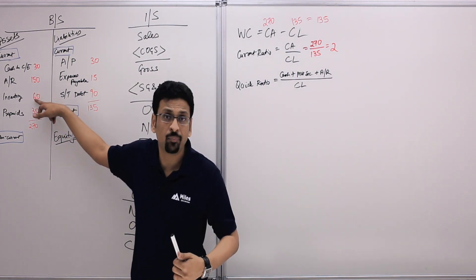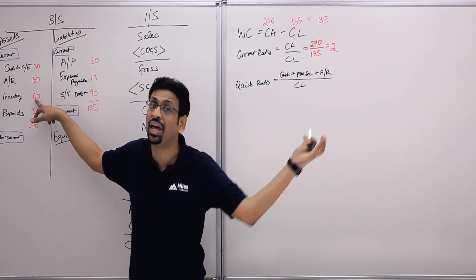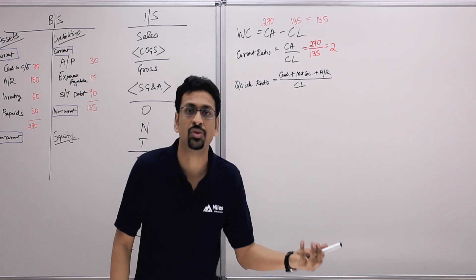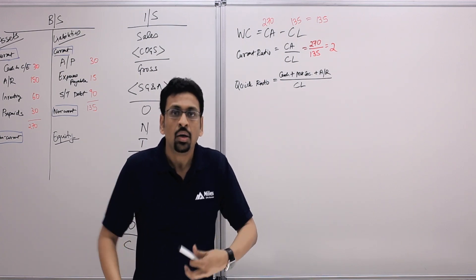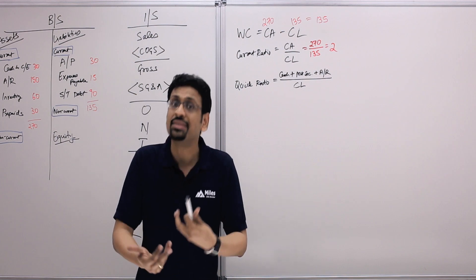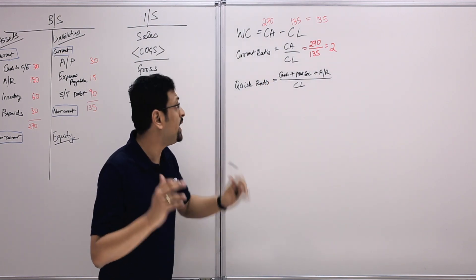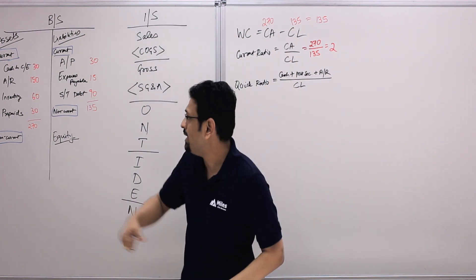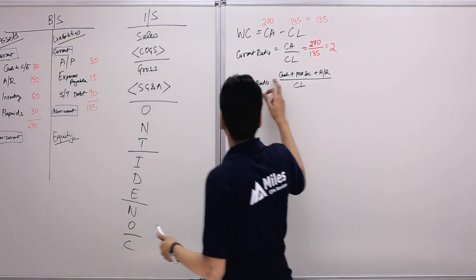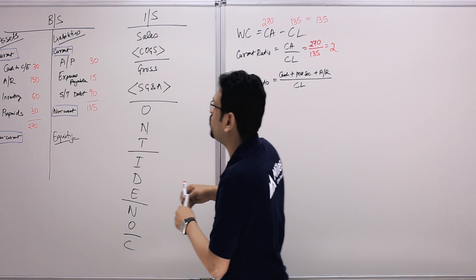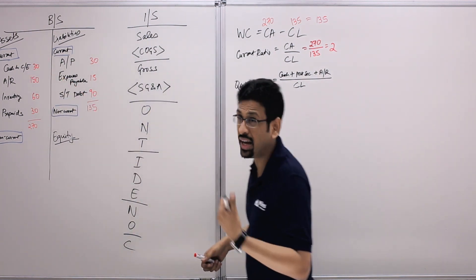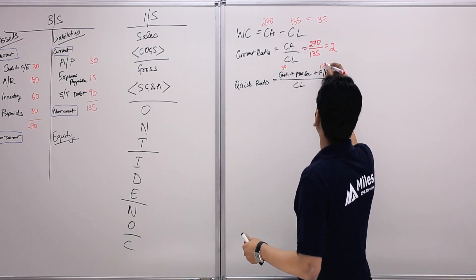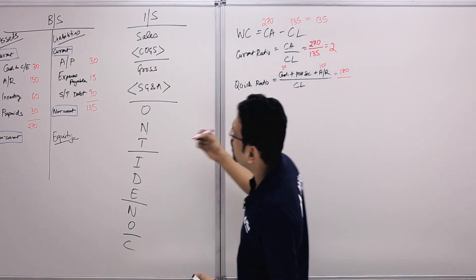We exclude inventory from the quick ratio because you must first sell the goods, then collect the cash. We also exclude prepaid expenses — if you've paid rent in advance, you can't get it back from your landlord. So the quick ratio numerator is current assets minus inventory minus prepaids. Cash is 30, receivables is 150, no marketable securities — numerator is 180.